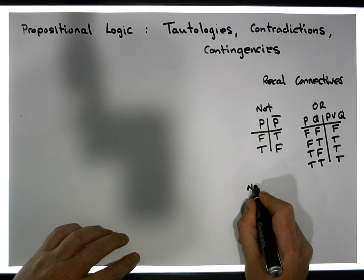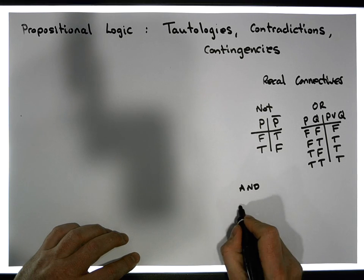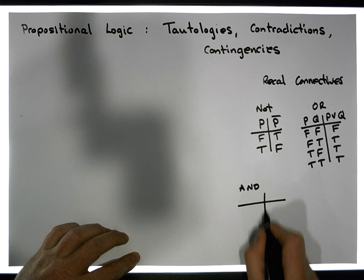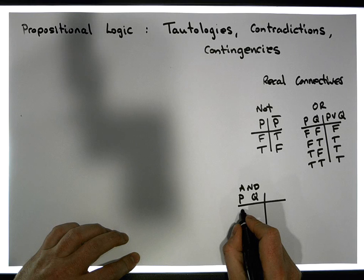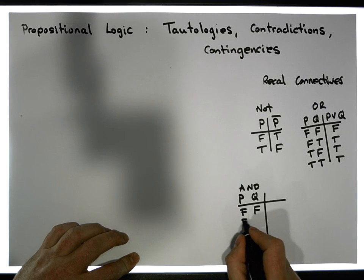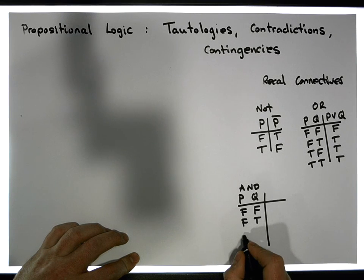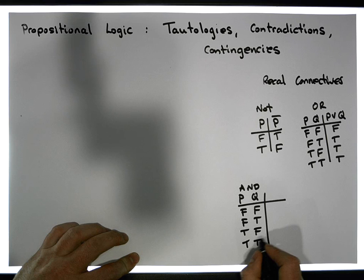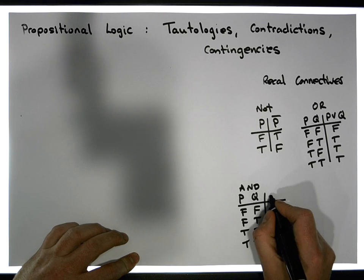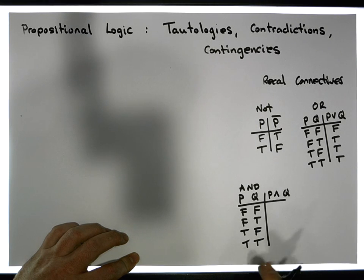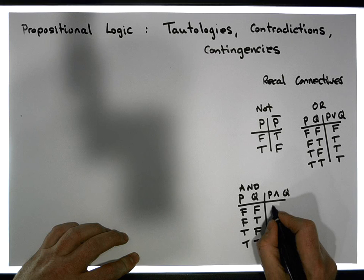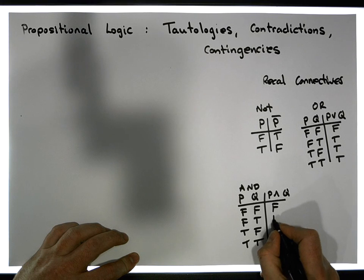And we have the AND connective, which also takes in p and q. The truth values are: false AND false = false, false AND true = false, true AND false = false, true AND true = true. P AND q is only ever true when both of them are simultaneously true; everywhere else we have false.